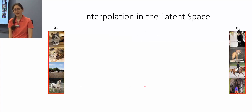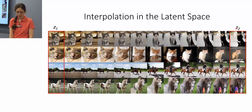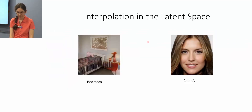To verify that SCN does not memorize samples during training, we visualize samples by interpolating in the latent space. We take two random latent representations Z1 and Z2 and generate intermediate samples by linearly interpolating between them. The transition is smooth and meaningful, confirming generalization. We performed the same analysis for the bedroom dataset and CELEB-A.